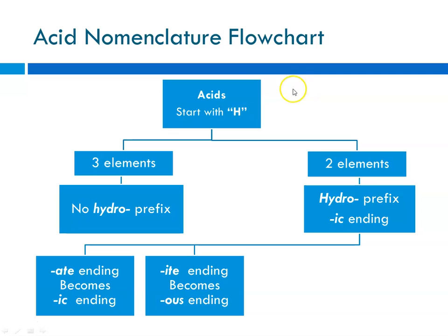We had a flowchart, and again, here, acids, you'll know from the formula, because their formula starts with an H, the hydrogen ion. If there are only two elements present, binary compound, then we name it hydro blank ic acid. If there are three elements, you do not use the hydro prefix. And then, you look at the anion. If the anion ends in -ate, it becomes the -ic acid. And if it ends in -ite, sulfite ion becomes sulfur -ous acid. Again, no hydro prefix.